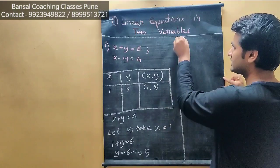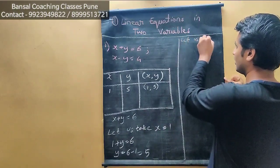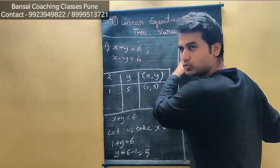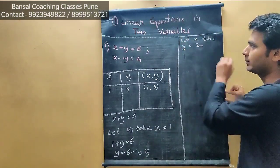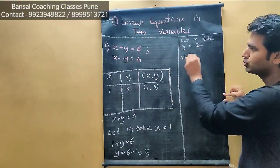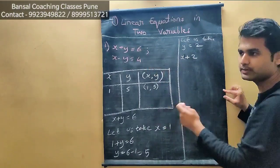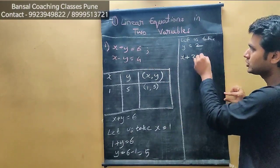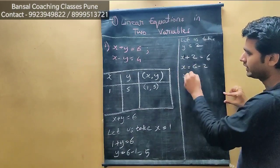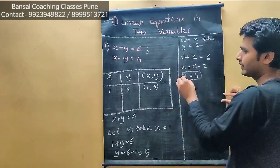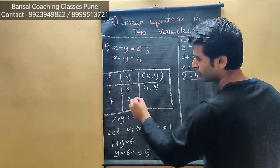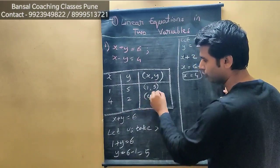Similarly, we can assume y as well. Let us take y is equal to 2. So x plus 2 equals 6, therefore x equals 6 minus 2, x equals 4. That means x is 4 and y is 2. So our second point is (4, 2). We always write x first, then y.